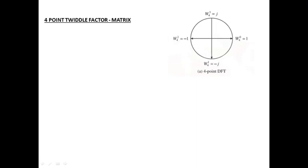We are seeing how to form the twiddle factor matrix; later we will use it to compute DFT values. Now continuing with the four-point twiddle factor matrix. You can represent the twiddle factors as W4^0, W4^1, W4^2, W4^3.